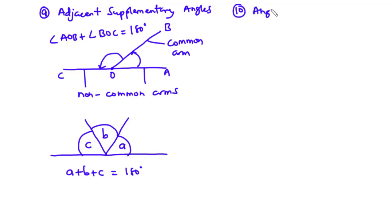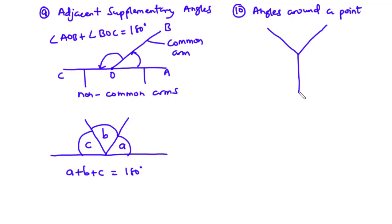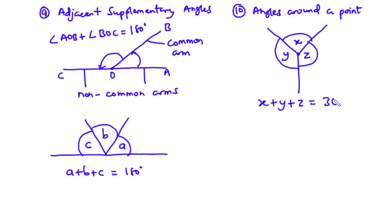When many lines meet at a point, they form angles around a point and the sum of these angles equals 360 degrees. Assuming three lines meet at a point, we have angles X, Y, and Z. The sum of these angles is equal to 360 degrees, so X plus Y plus Z equals 360 degrees.